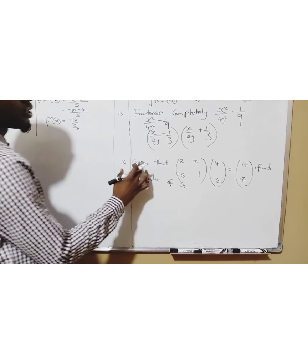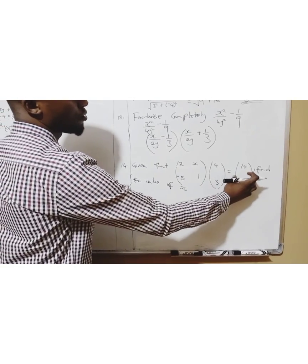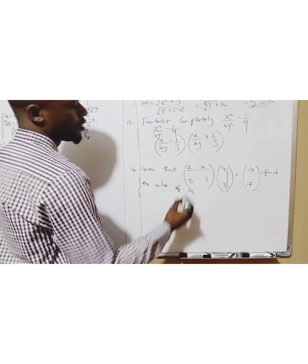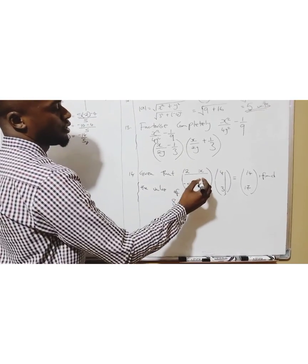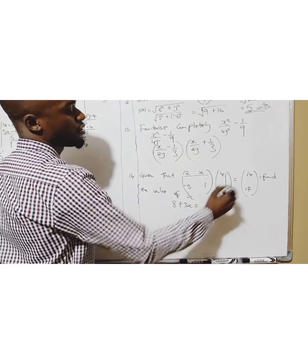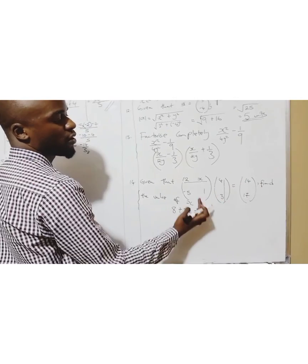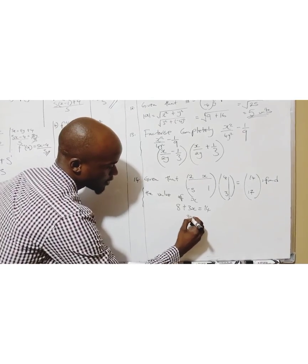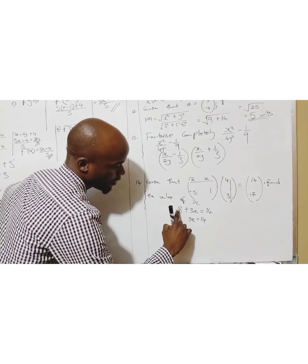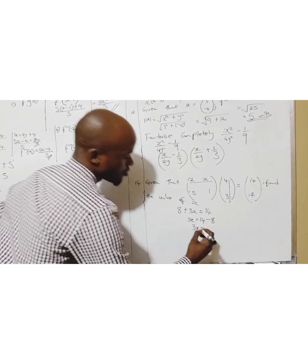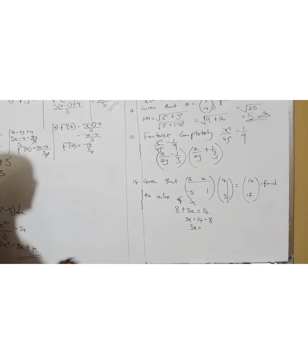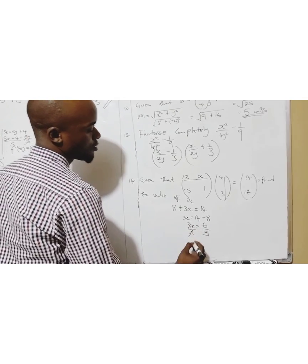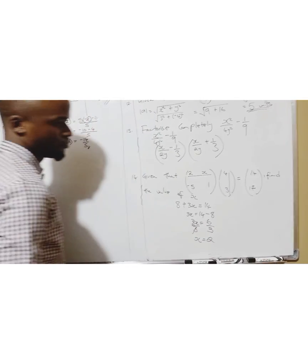Question fourteen: given that this matrix times that equals that matrix, find the value of x. Row by column: 2 times 4 is 8, x times 3 is 3x, and this equals 14. You follow the first number. So you have 3x equals 14. This positive 8 goes this side, minus 8. 3x equals 14 minus 8, which gives you 6. Divide by 3. So x equals 2.